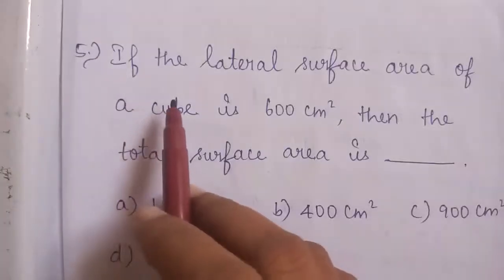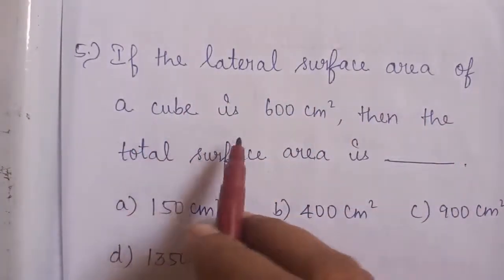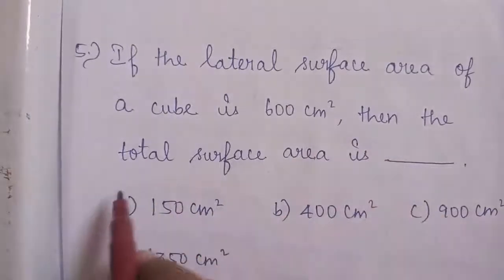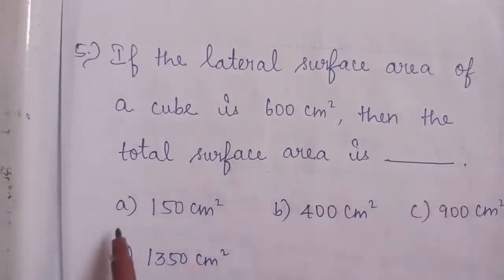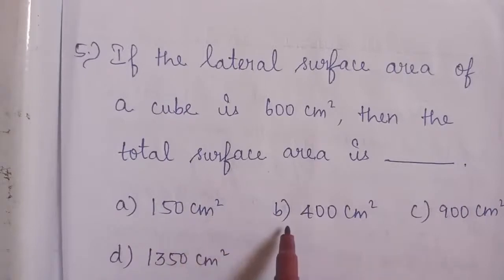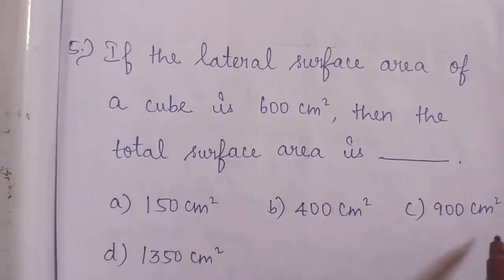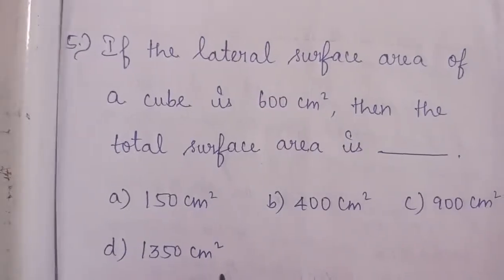Question No. 5: If the lateral surface area of a cube is 600 cm square, then the total surface area is dash. Option A: 150 cm square. Option B: 400 cm square. Option C: 900 cm square. Option D: 1350 cm square.